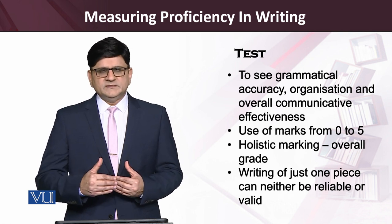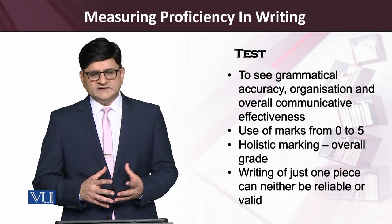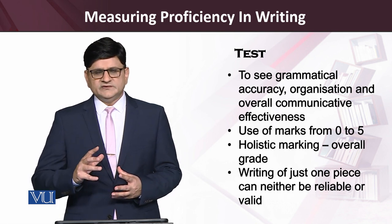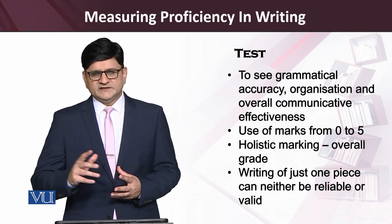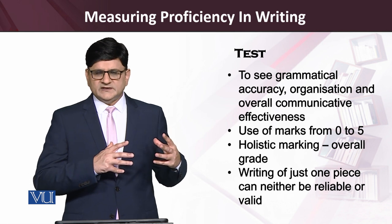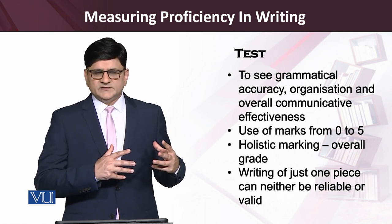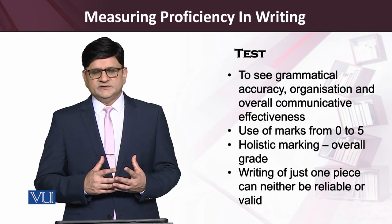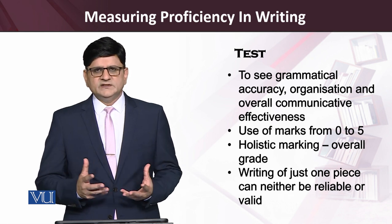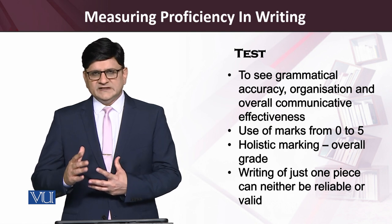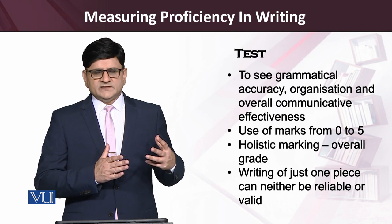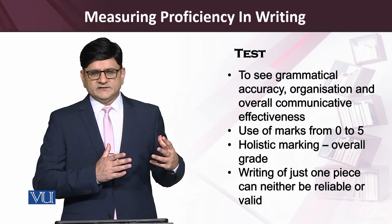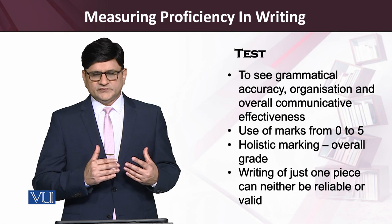It's important to remember what the research suggests: we cannot measure students' proficiency on the basis of just one piece of writing; rather it requires multiple pieces of writing. In order for the assessment to be reliable, we need to validate it on the basis of multiple drafts — for example, a second or third draft — and then we can conclude about the proficiency level, whether it's band 6, 6.5, 4, or 4.5 in IELTS terms.